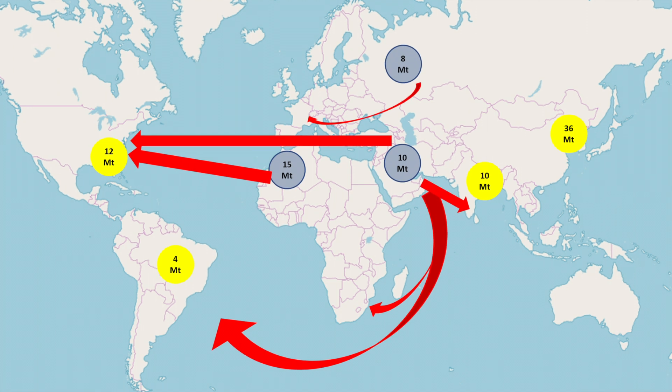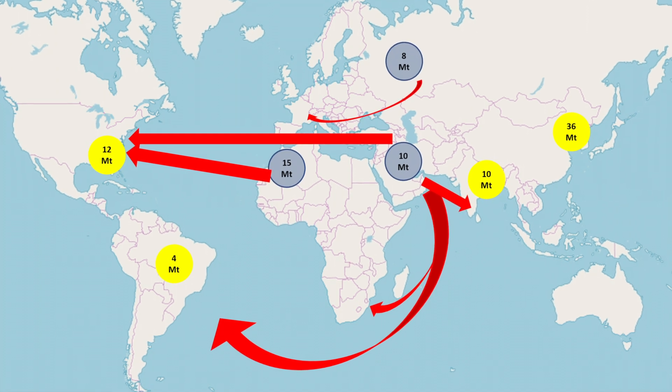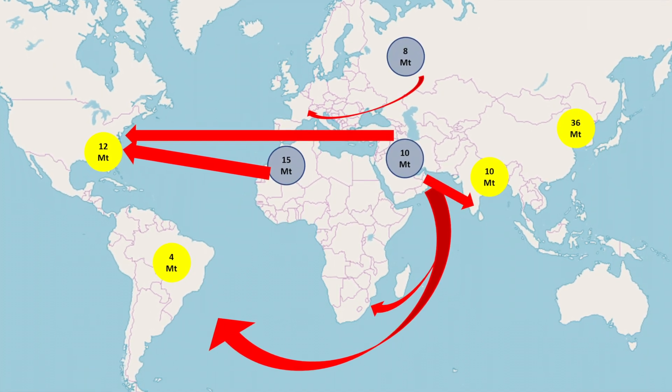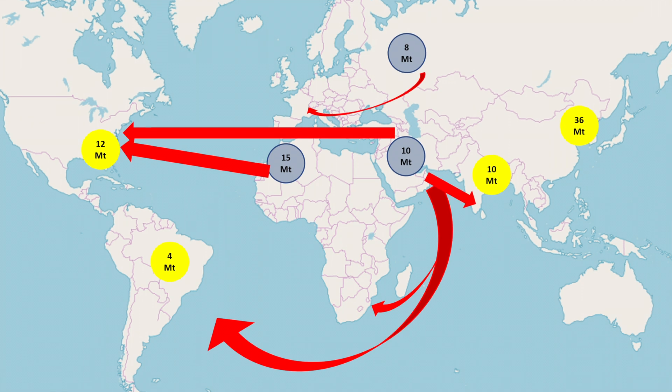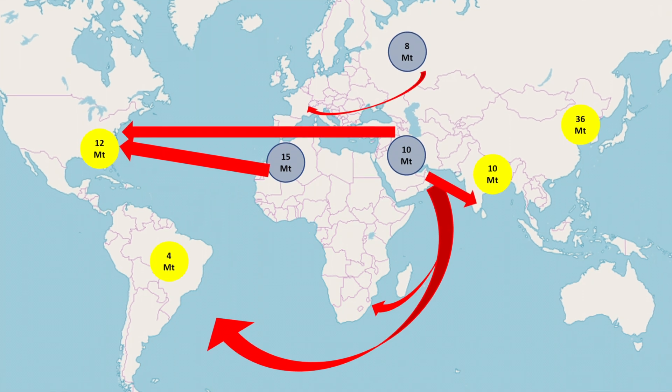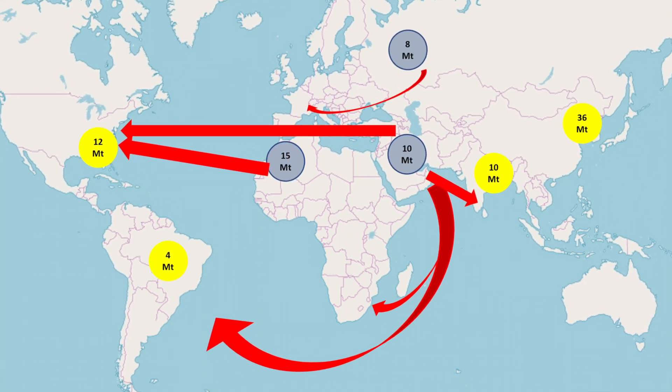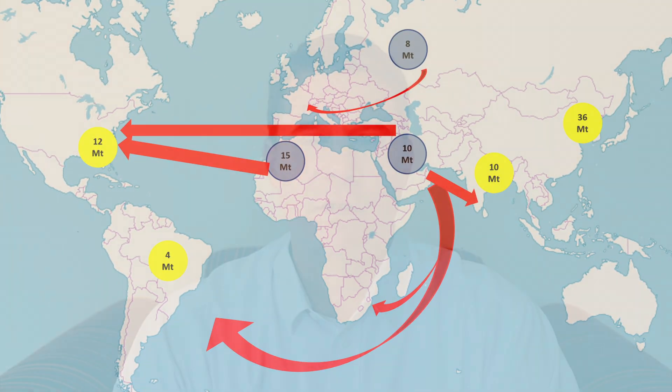As with most fertilizers, the vast majority of phosphate producers are integrated into their raw material. The big exception to this is India, which has no phosphate deposits and therefore imports all of the phosphate raw materials — they import phosphate rock as well as phosphoric acid and produce the finished fertilizers in their local plants.